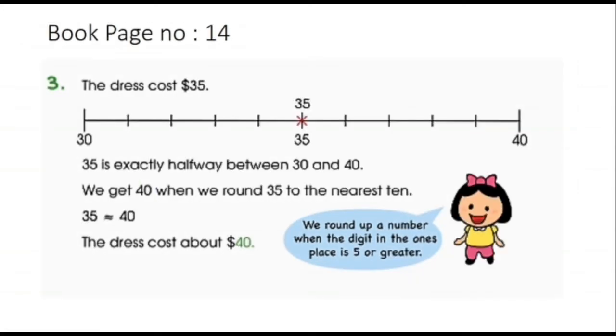Next, book page number 14, example number three. The dress cost dollar 35. Look at the number line: 30, 35, and 40.